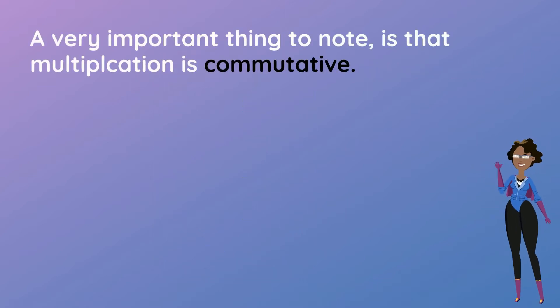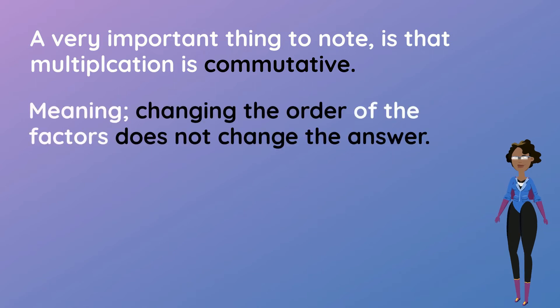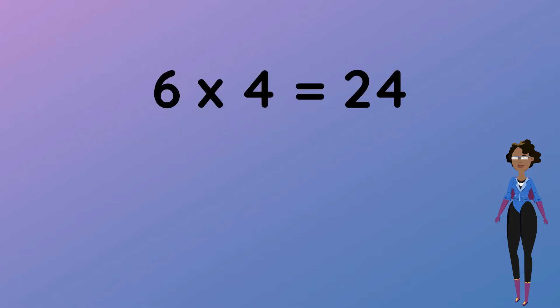A very important thing to note is that multiplication is commutative, meaning changing the order of the factors does not change the answer. 6 multiplied by 4 equals 24 and if you switch it around to 4 multiplied by 6 the answer is still 24. Isn't that cool?